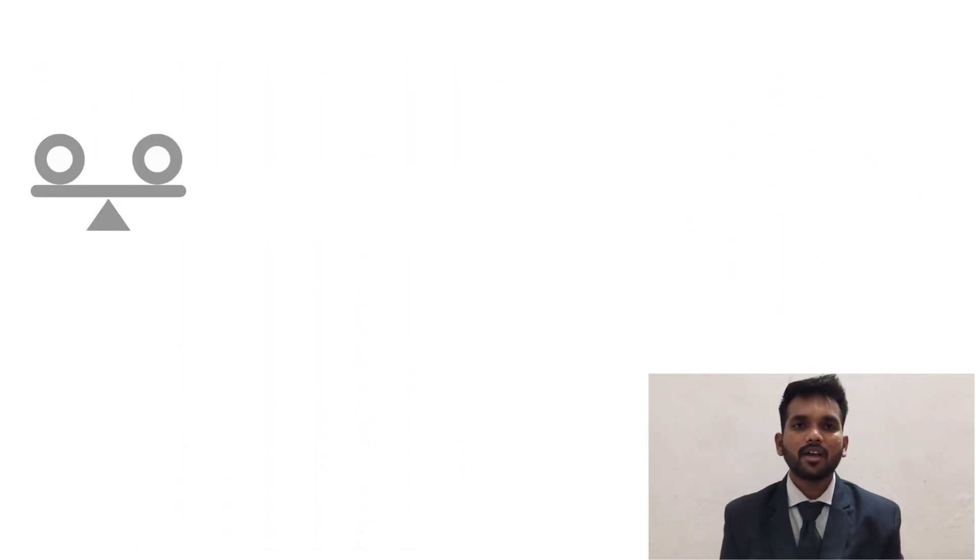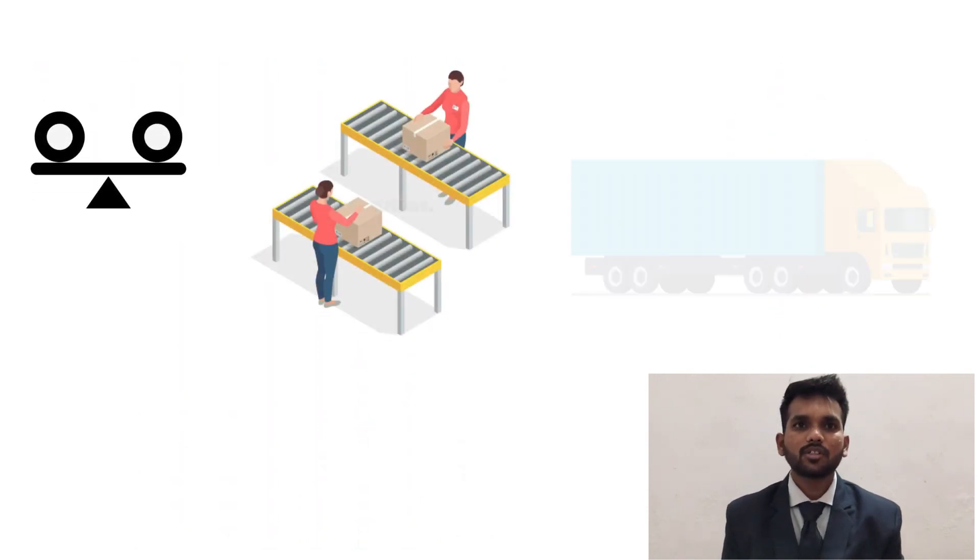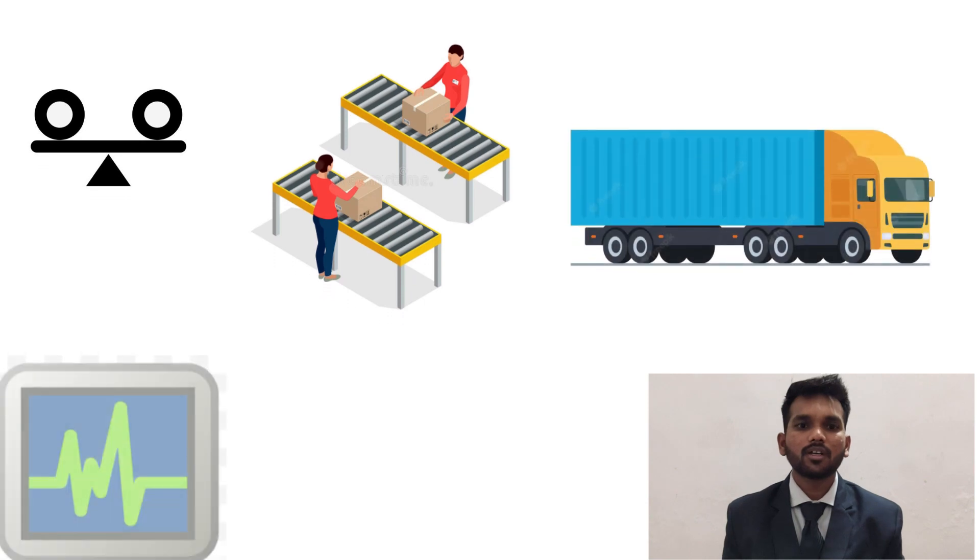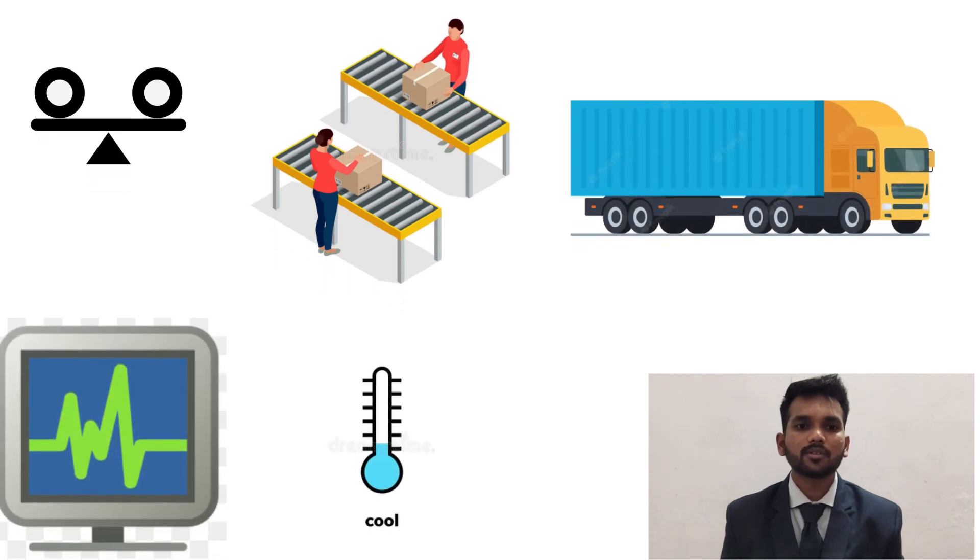Some regulations in cold chain logistics include product stability, packaging, transportation, monitoring, and temperature minimums.